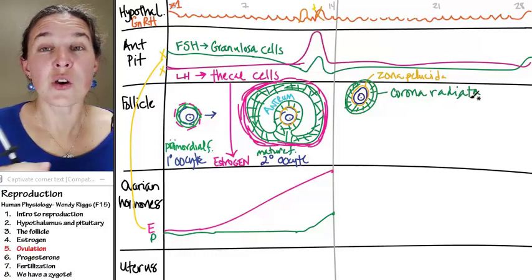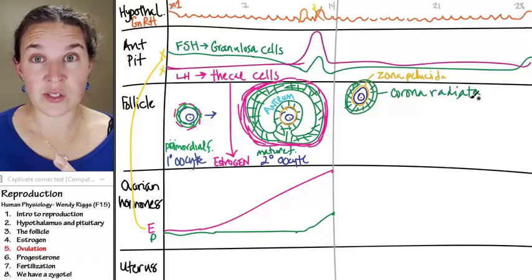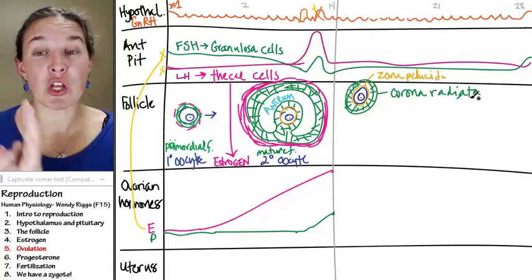So, zona pellucida, corona radiata, surround the secondary oocyte, and that's what gets exploded out.